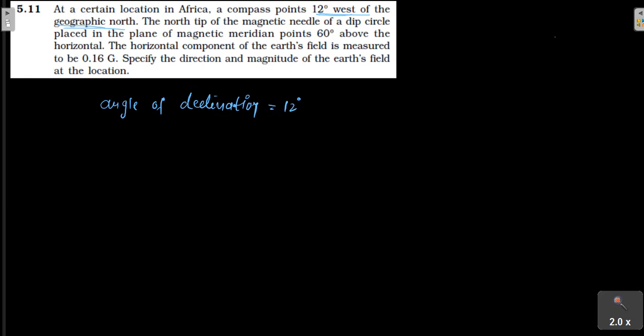Then what are you saying? A north tip of the magnetic needle of a dip circle placed in a plane of magnetic meridian. Point of 60 degrees above the horizontal. So, this angle is being made with magnetic meridian. So, this is your angle of dip.